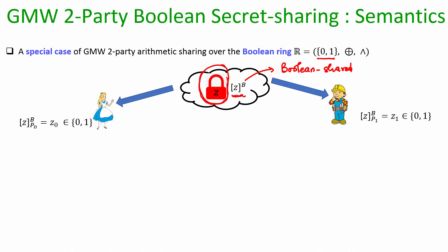The GMW secret sharing is very simple: Alice's share will be a bit Z₀, Bob's share will be a bit Z₁, and they are related by the relation that the XOR of the shares available with Alice and Bob equals the actual bit Z. This notation denotes Alice's share for Z, and this denotes Bob's share for Z.